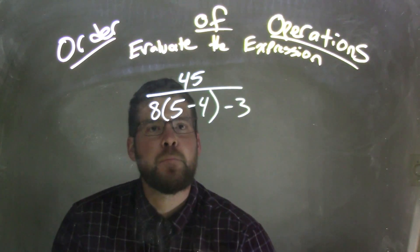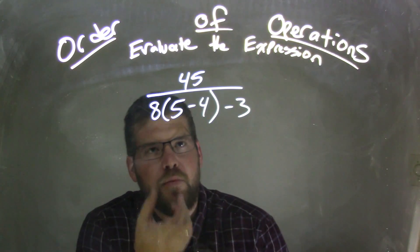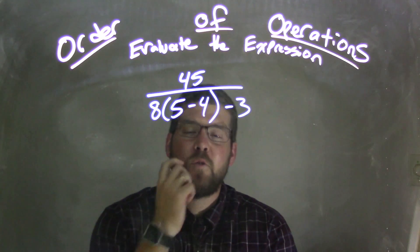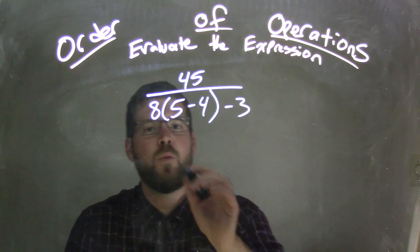A little more difficult here, but we have to deal with what's inside the parentheses first. What's inside the parentheses? Well, 5 minus 4 is first, that's inside the parentheses. 5 minus 4 is 1.